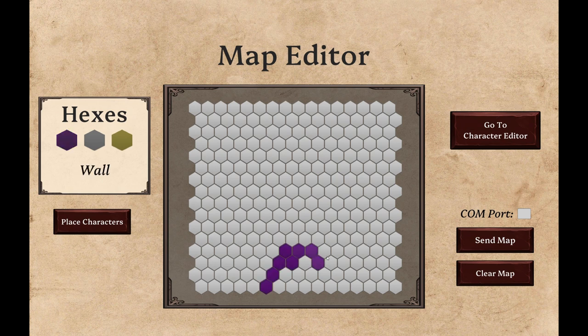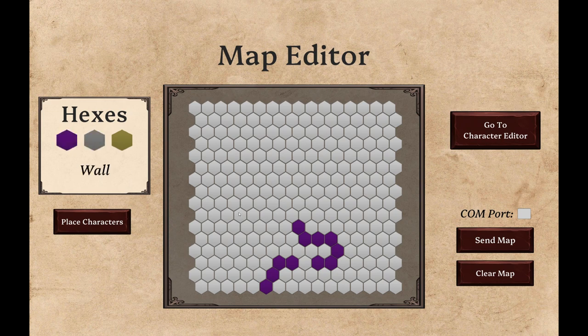You can place walls, chests, and set hexes back to floor if needed. If you make a mistake, you can always use clear map.